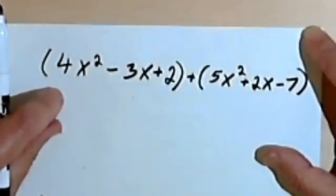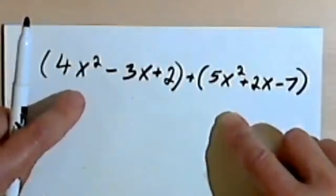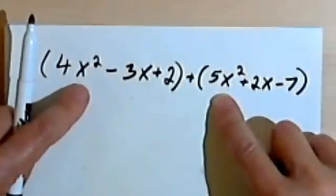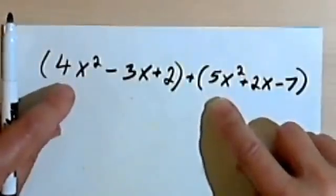So what we're going to do is called combining like terms. Like terms are terms where the variables are the same, in other words the x's in this case, and the exponents are the same, although the coefficients might be different.